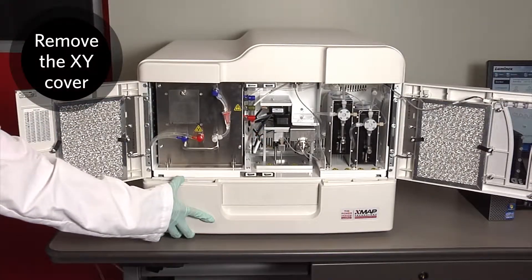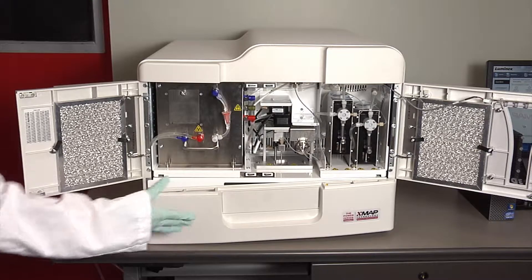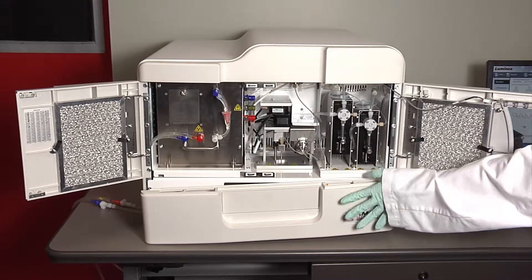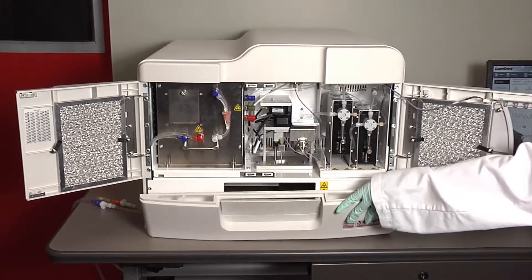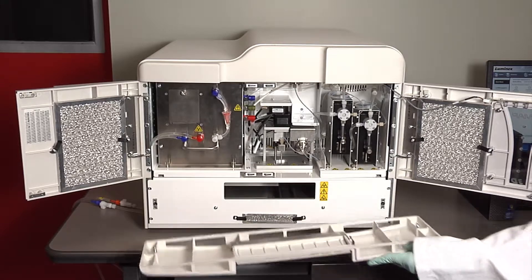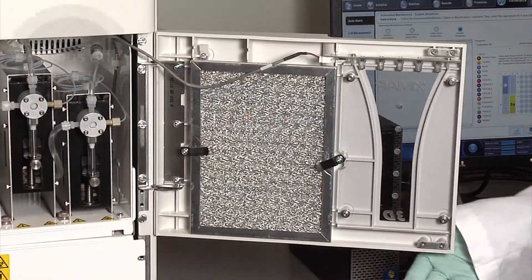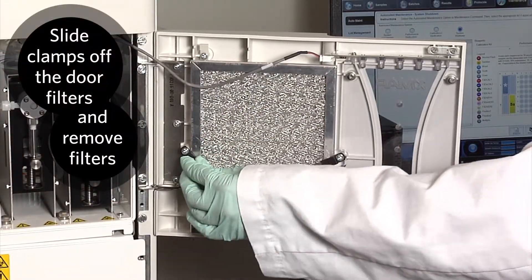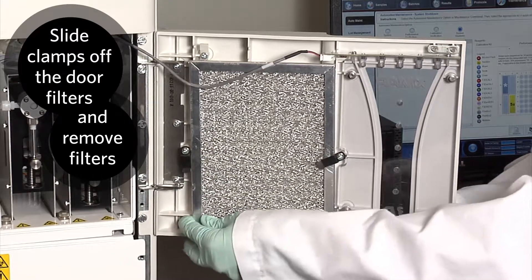Remove the XY cover by gently grasping its ventilation holes and pulling it straight out. Slide clamps off the left and right silver door filters and remove the filters.